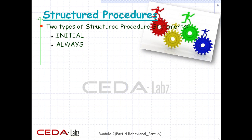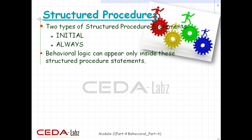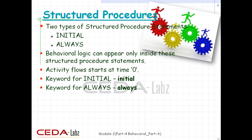There are two structured procedure statements in Verilog: always and initial. These are the two most basic statements in behavioral modeling. All behavioral statements can appear only inside these structured procedure statements. Verilog is a concurrent programming language, unlike C which is sequential. Activity flows in Verilog run in parallel rather than in sequence. Each always and initial statement represents a separate activity flow, and each starts at simulation time zero. The keywords always and initial are written in lowercase, and these statements cannot be nested.